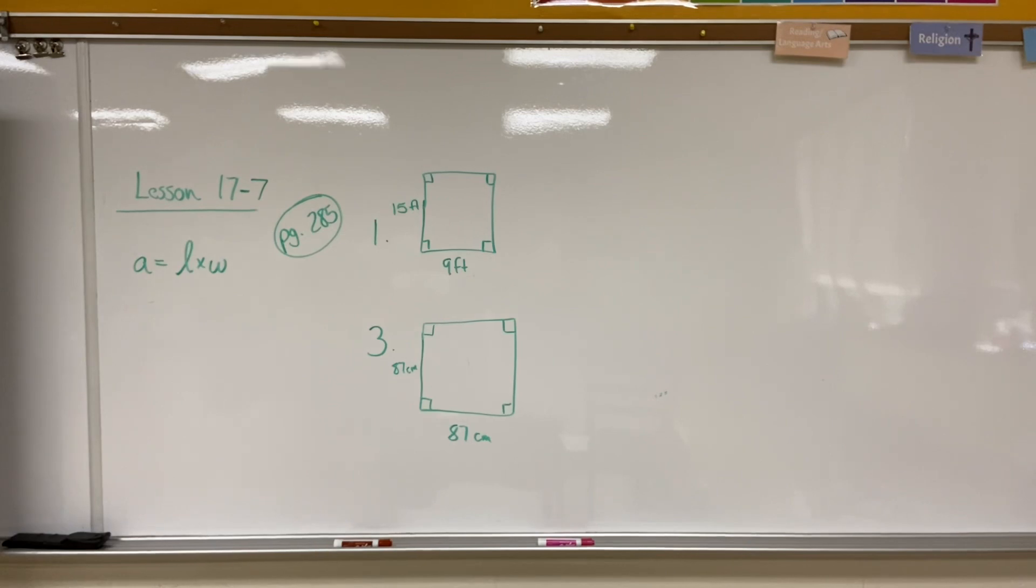All right, my fourth grade friends. If we take a look at page 285 in our workbook, you will see that we're going to be doing practice problems number one and three. The directions say find the area of the figure. Be sure to use the correct units in your answer. So units for number one will be feet squared, and for number three would be centimeters squared. If you have any questions on how to use area formulas, please let me know when you come to class tomorrow.